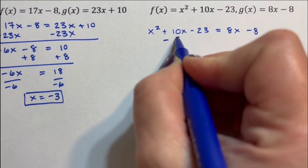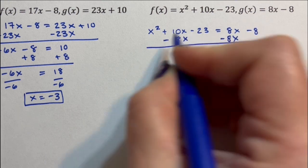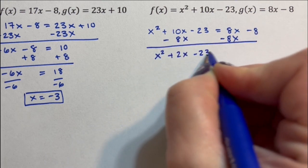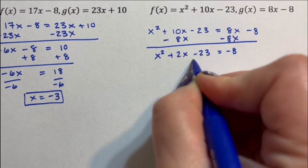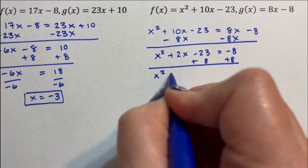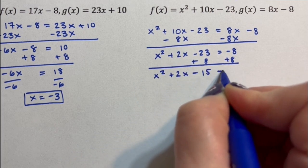So I'm going to subtract 8x from both sides. x squared plus 2x minus 23 equals negative 8. Add 8. x squared plus 2x minus 15 equals 0.